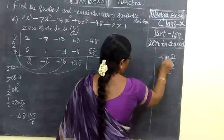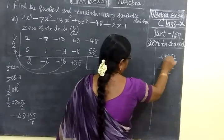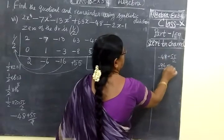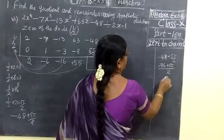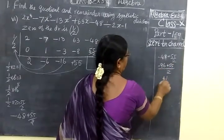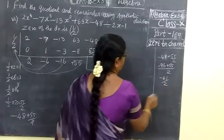Minus 48 plus 55/2. LCM 2, cross multiply. If you cross multiply, you are getting minus 96 plus 55. Now you will subtract: 6 minus 5 is 1, 9 minus 5 is 4, so minus 41/2.